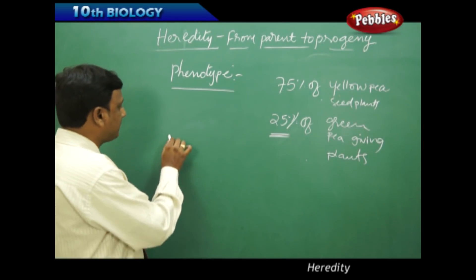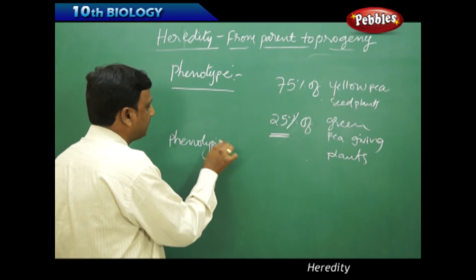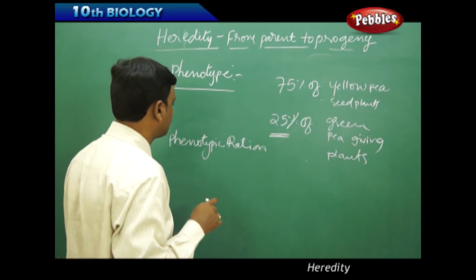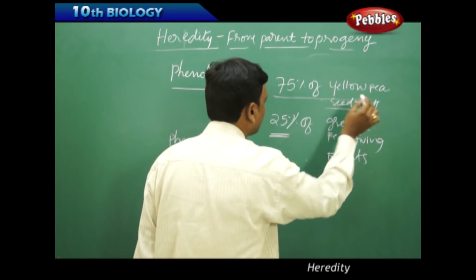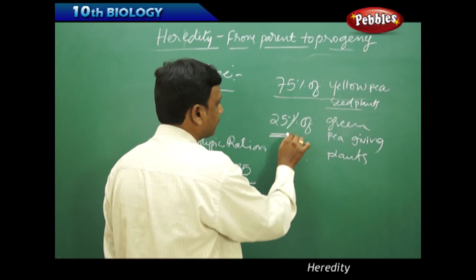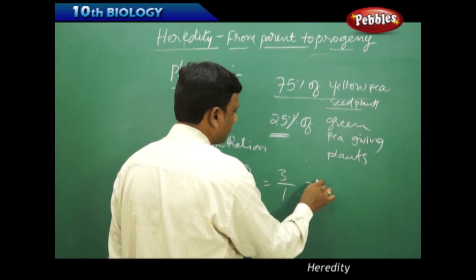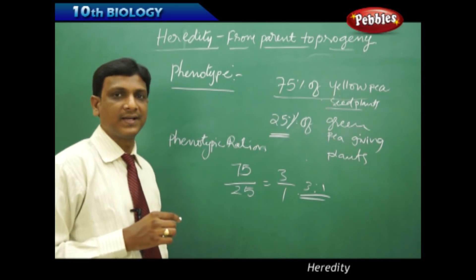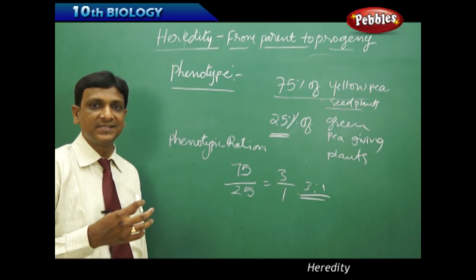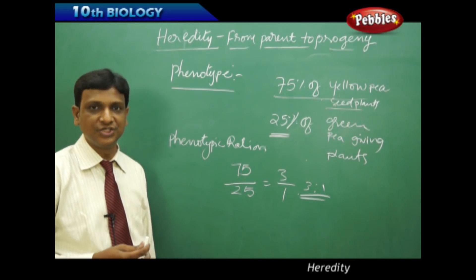Now let us see the phenotypic ratio in this generation. We find the phenotypic ratio as 75% yellow pea producing plants to 25% green pea giving plants, which gives us 75 to 25, simplified to 3 is to 1 — that is the phenotypic ratio. Now let us see what is the genotype — that means genetically how the factors are arranged — and that shows the genotypic ratio.